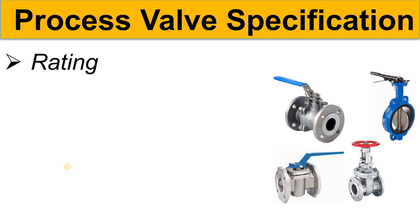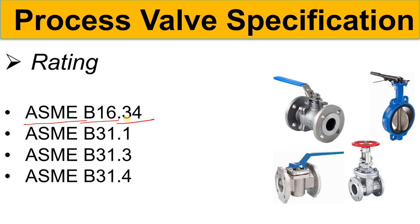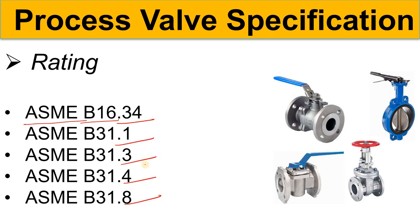The next information is the rating, which is also very important for selecting valves from a process point of view. The flange rating is decided based on ASME B16.34. Other applicable standards include ASME B31.1 for power piping, ASME B31.3 for process piping, ASME B31.4 for liquid and slurry transportation, and ASME B31.8 for gas transmission and distribution piping systems. These ratings are mainly decided based on the pressure and temperature within the line.